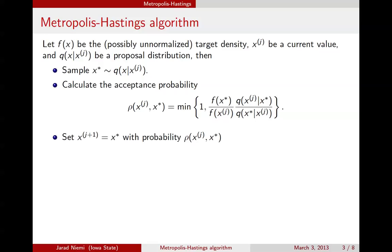We accept the proposed value with that probability, setting the new value x_{j+1} to x* with that probability. If we do not accept it, we set the next value to the current value x_j. This is very important and differs from the accept-reject algorithm, where we would just repeat the entire process. Here, we do not repeat the process — we just set the next value equal to the current value.